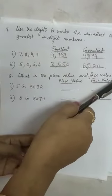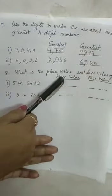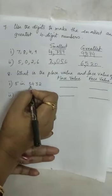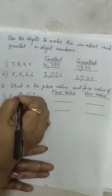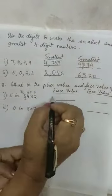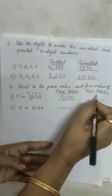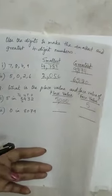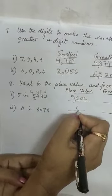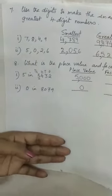What is place value and face value? Children, I hope you all know. Place value of 5: where is 5? Here it is in the thousands place — 1s, 10s, 100s, 1000s — so the place value is 5 into 1000, that is 5000. And the face value is 5. The face value is always the number itself. Place value of 0 in 8079 is always 0, and the face value of 0 is also 0.